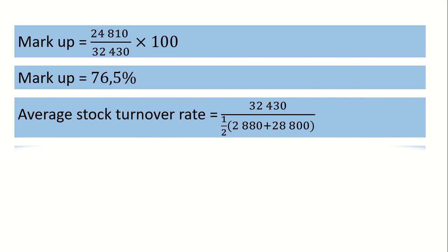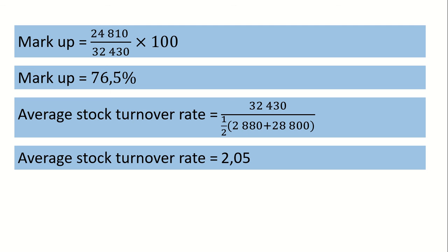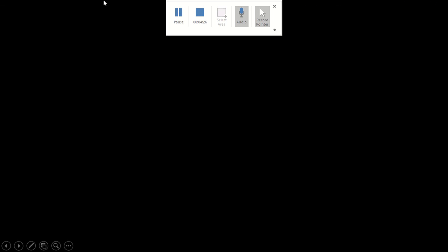Your average stock turnover rate is 2.0 — basically, they turn their stock roughly twice. It tells you how often you turn your trading stock into cash. Please look at your average stock turnover rate ratio and note what it actually means. To calculate it, you will simply take your cost of sales and divide by the average cost of your trading stock, which is stock at the beginning of the year plus stock at the end of the year, divided by 2. It will give you 2.05. And that's it with respect to question 2.